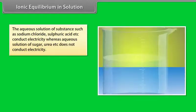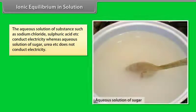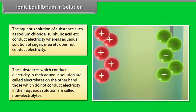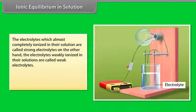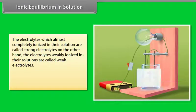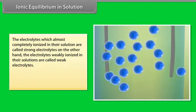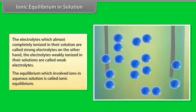The aqueous solution of substances such as sodium chloride and sulfuric acid conduct electricity, whereas aqueous solution of sugar and urea does not conduct electricity. Substances which conduct electricity in their aqueous solution are called electrolytes; those which do not are called non-electrolytes. Electrolytes which are almost completely ionized are called strong electrolytes, while those weakly ionized are called weak electrolytes. The equilibrium which involves ions in aqueous solution is called ionic equilibrium.